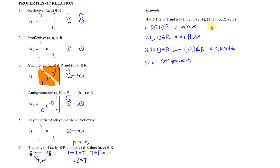Fifth, asymmetric. Although it's anti-symmetric because only one-way relationships can be found, however, we could also find looping. Then this is not asymmetric. We have to make sure there is no looping and all one-way relations — only then is it asymmetric.